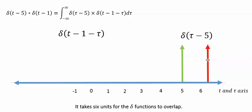So it takes six units for the delta functions to overlap, so what is left is just a delta T, not tau, minus six.